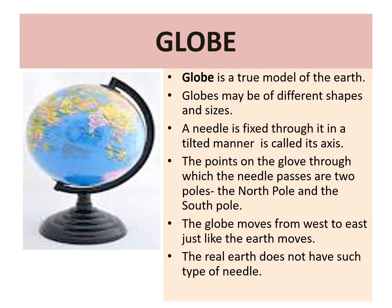On the globe, countries, continents, and oceans are shown. It is difficult to describe the location of a point or place on a sphere like the Earth — we need certain points of reference and lines to find out the location of a place. A needle is fixed through the globe in a tilted manner, which is called its axis. The two points through which the needle passes are the North Pole and South Pole. The globe can be moved around this needle from west to east, just as the Earth moves. The real Earth has no such needle — it moves around its axis, which is an imaginary line.